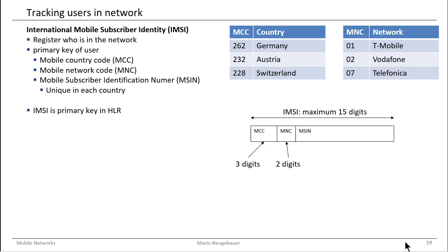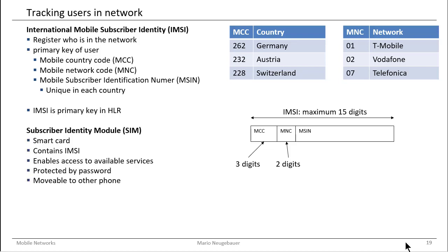The MSIN is also a good candidate for a primary key in our Home Location Register, which is the register for all users in our network. The Home Location Register is one component where the MSIN is stored.